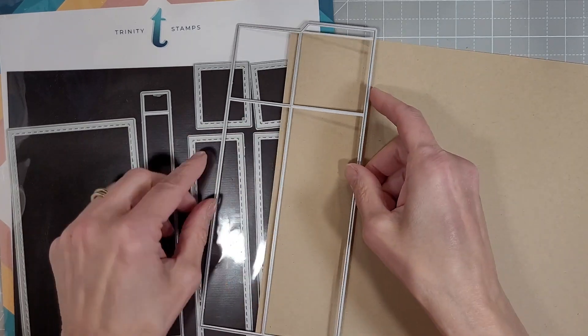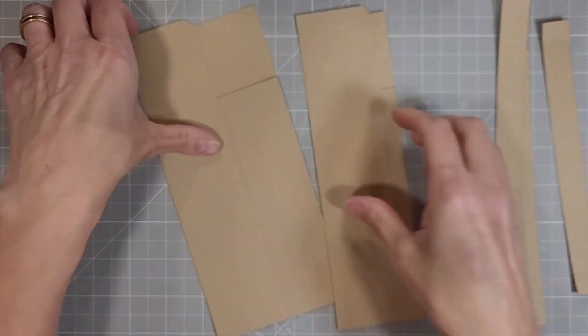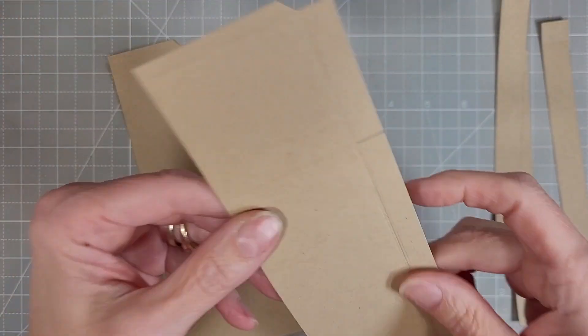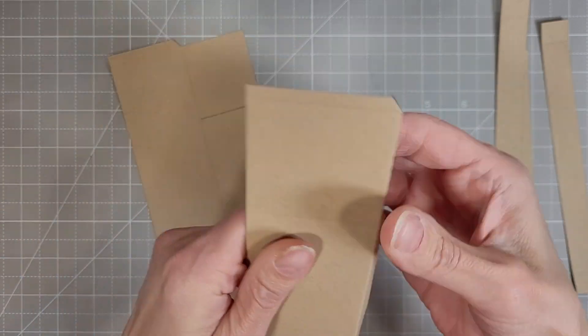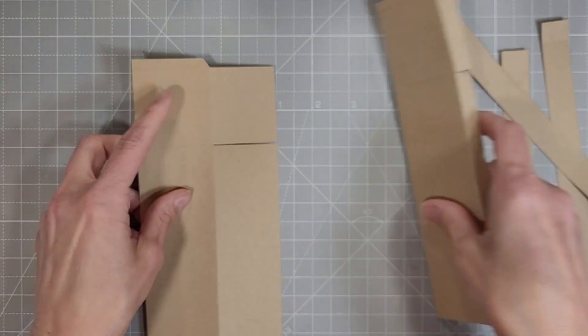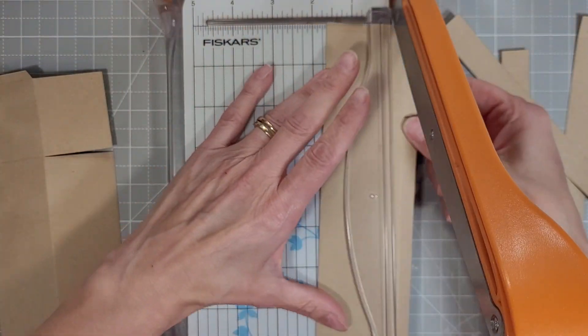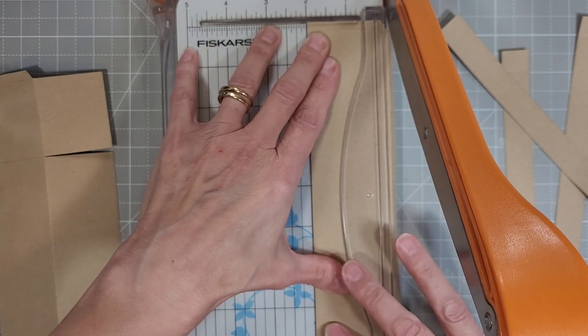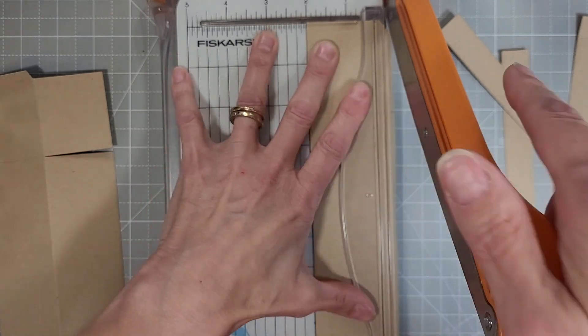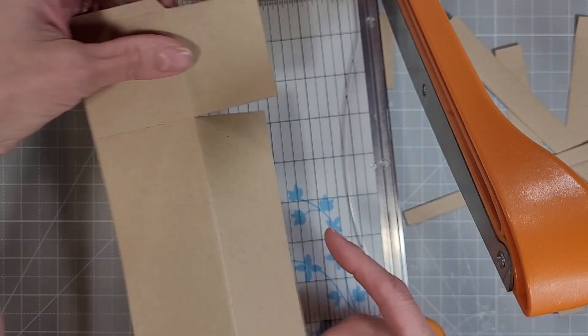We're going to start out by cutting two panels for the box card and we're going to trim off the flaps except for the very back flap. So we're going to take these over to my guillotine trimmer and I'm going to fold over the parts that I want to cut off and line those up with the edge of the blade. Just by folding them on the score lines it makes it really easy to line them up for where you want to cut them off.